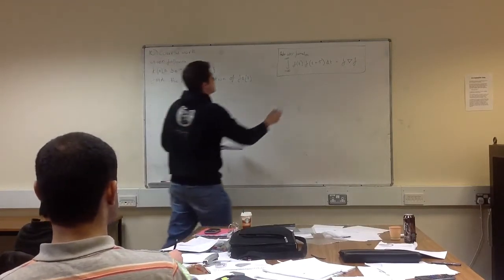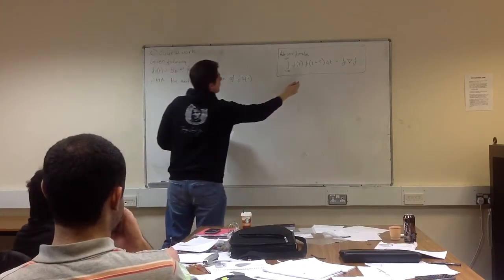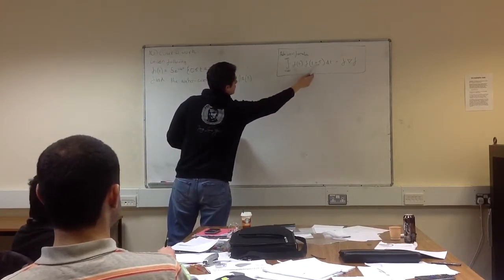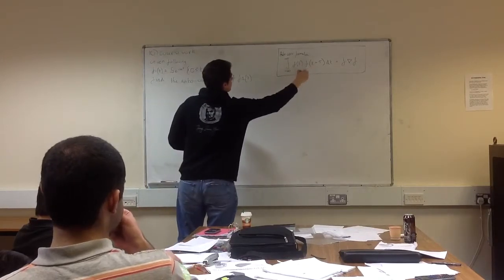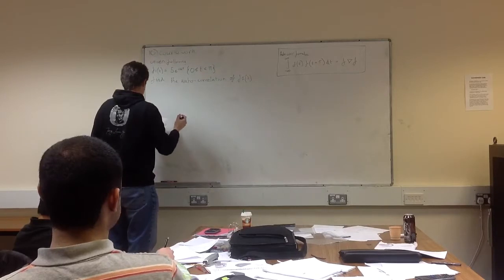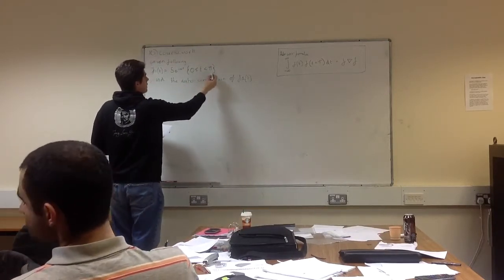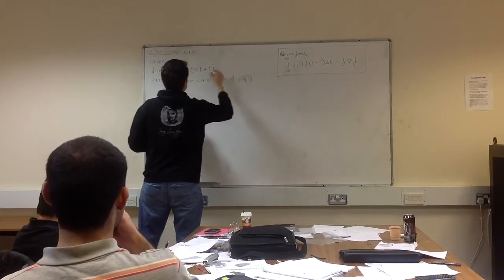The autocorrelation formula is this. So you take the function, you multiply it by the function plus shift, effectively, and then you do the integral of that. So let's start off with the uniform f2. Our period is here, so these will change to the period we've got.